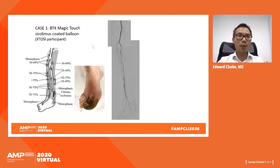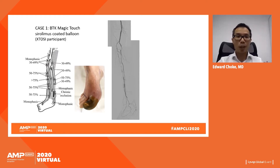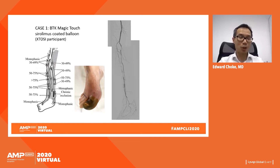In Case 1, an ECSTASY trial participant had a Rutherford 5 lesion — critical limb ischemia — in the form of right foot big toe gangrene with infection spreading up the dorsum of the foot. Pre-operative duplex showed extensive diffuse below-the-knee disease. The target was the anterior tibial artery to achieve inline flow into the right big toe, with diffuse disease of the anterior tibial artery seen on the procedural angiogram.